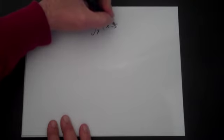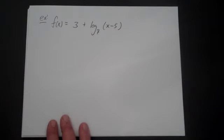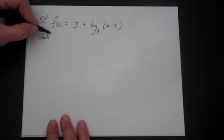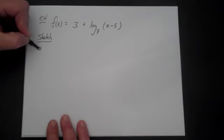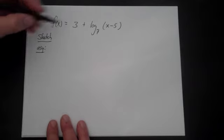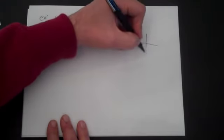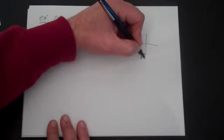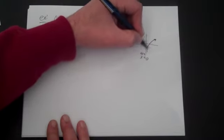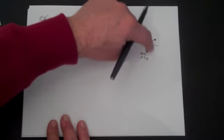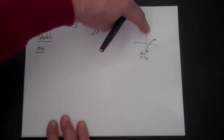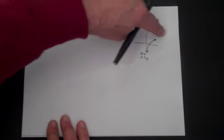Let's look at an example: f of x equals 3 plus log base 7 of (x minus 5). The first thing we want to do is sketch the graph and pay close attention to what the asymptote is. The asymptote starts out at x equals 0 for the basic log function, and then we're going to possibly flip it around and shift it. This one shifts up 3 and shifts right 5.